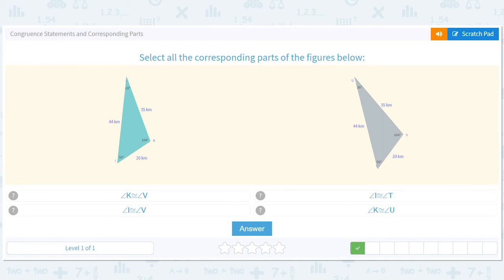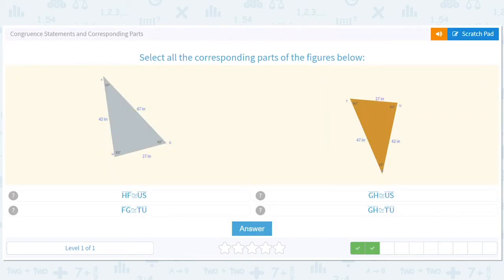Angle K and angle V. So angle K is 104. Angle V is 104. We're good. Angle I is 50. Angle V is 104. We're not good. Angle I is 50. Angle T is 50. We're good. Angle K is 104. Angle U is 26. Those aren't the same. So those are the answers.